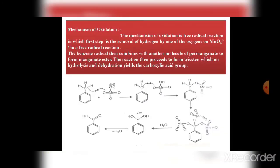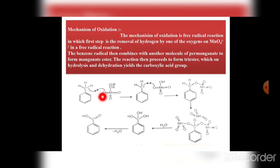The mechanism of oxidation is a free radical reaction. In the first step, there is removal of hydrogen — specifically, the C–H bond of the –CH₃ group is cleaved, shown by a half-curly arrow, forming a radical. This is the removal of hydrogen by one of the oxygen atoms of MnO₄⁻ in the free radical reaction.